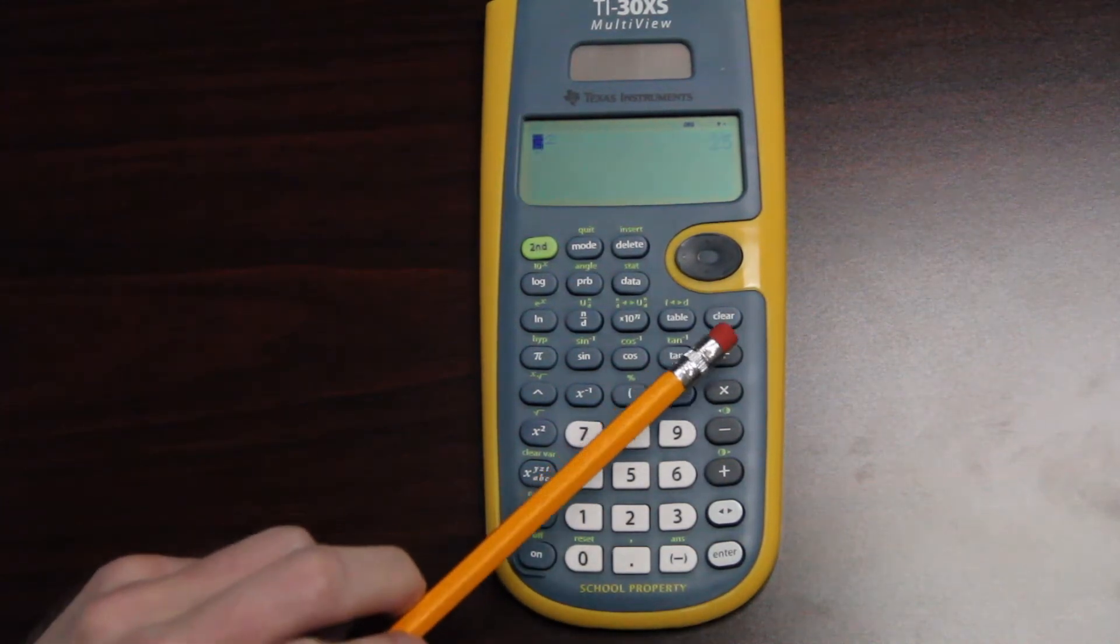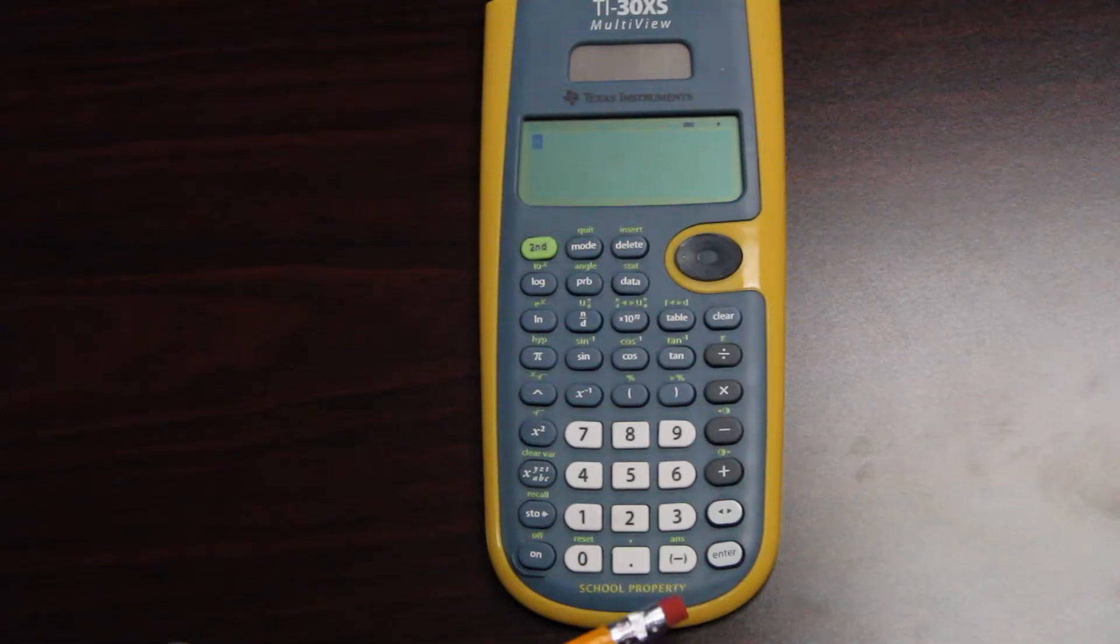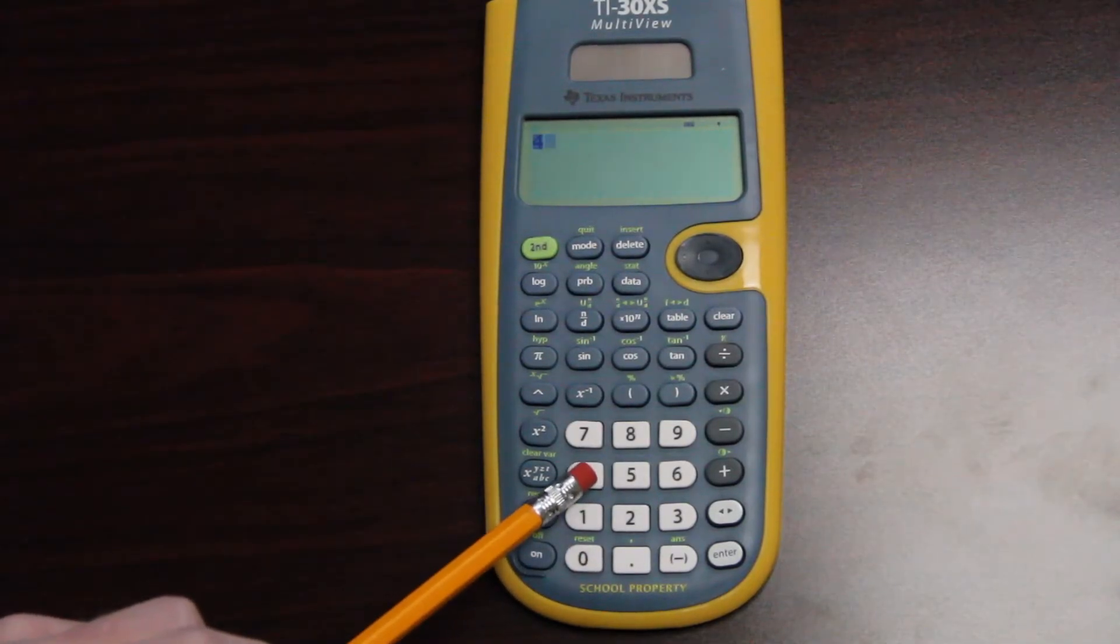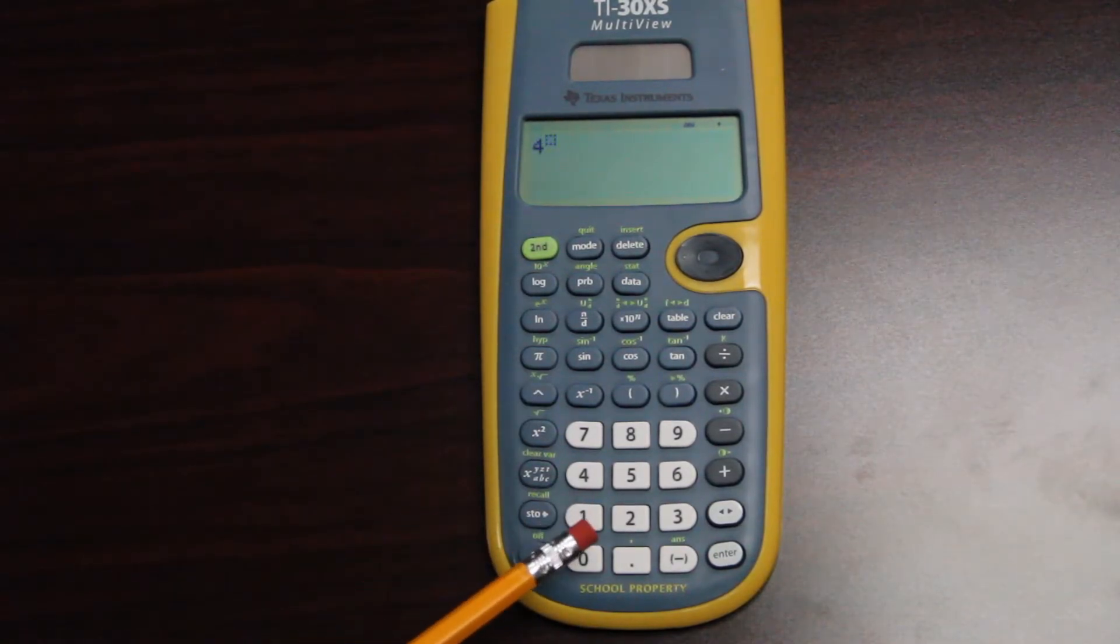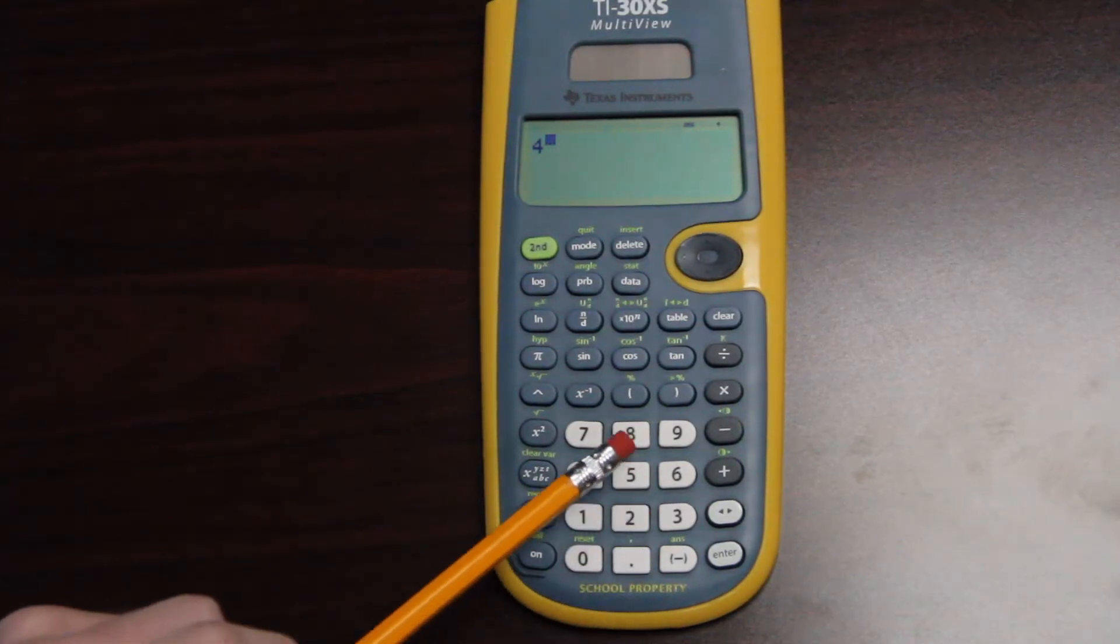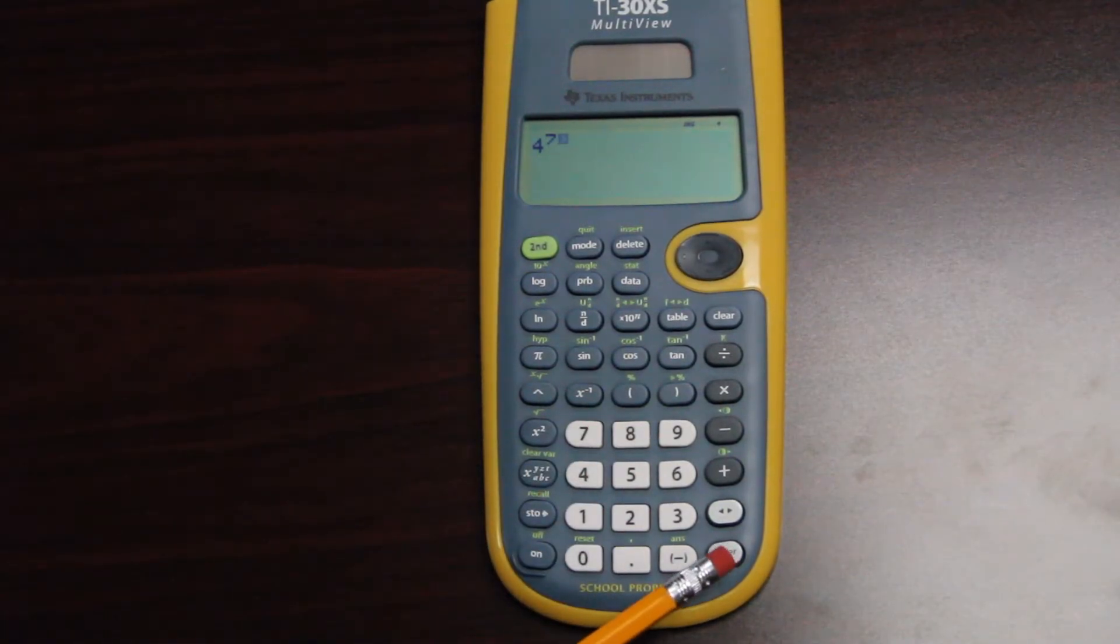I could also raise a number to a higher power, like the third, the fourth, the fifth, etc. The way that happens is I type in my number, I hit this what's called a caret right here, looks like an up arrow, and it brings me to an exponent. Then I just type in whatever exponent I want. Let's say it's the seventh power. I hit enter, and there's my answer.